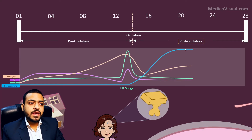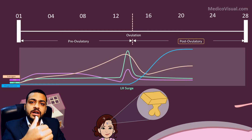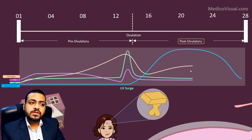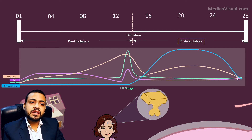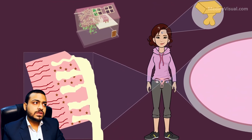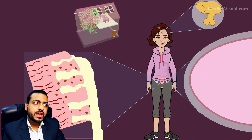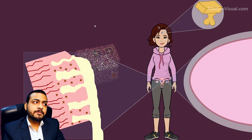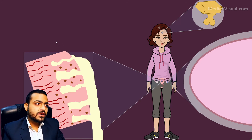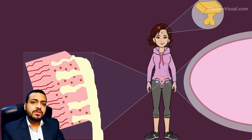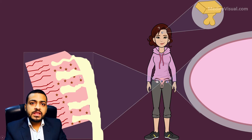As the corpus luteum begins degenerating, the level of progesterone as well as estrogen starts declining. FSH and LH remain low except for a slight rise at the end of the cycle as they have to start a new cycle. As progesterone level falls, the two functional layers of the endometrium are shed off, leading to bleeding.